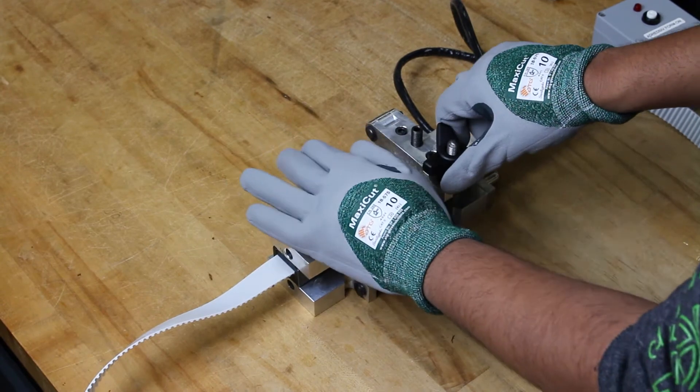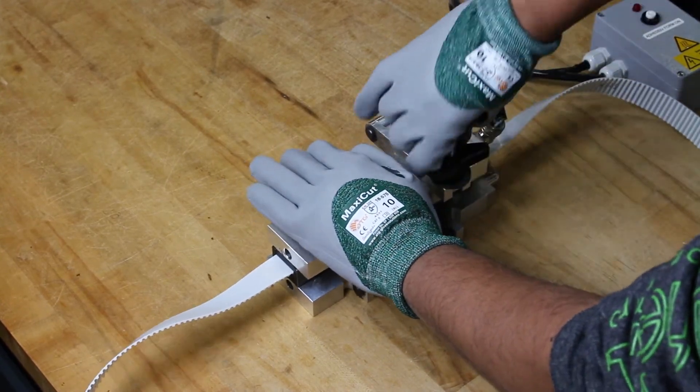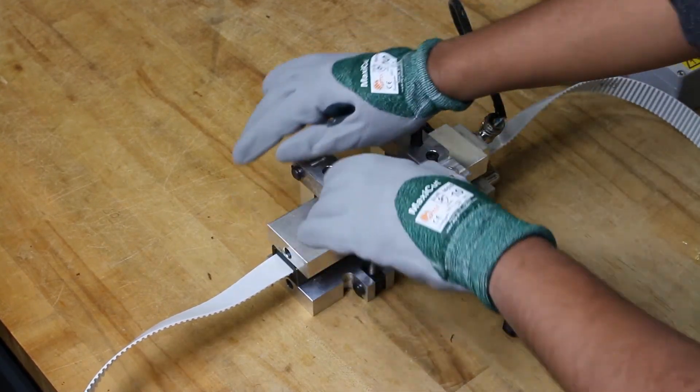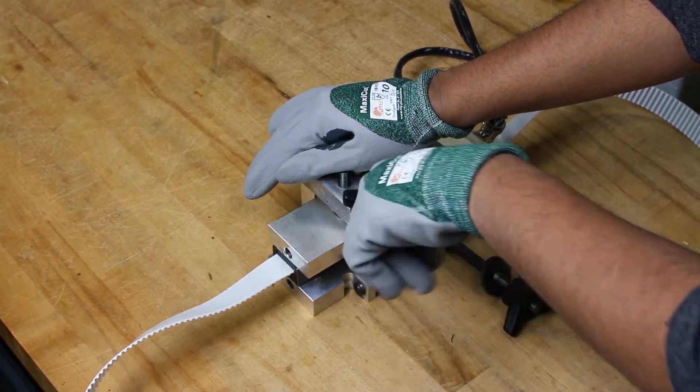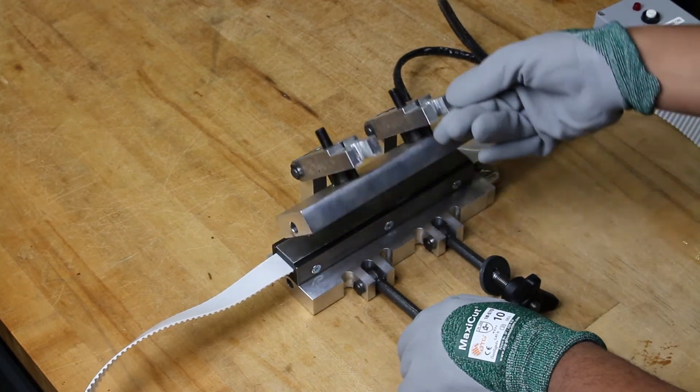Once the light on the control box goes out, you can unscrew the thumb screws and remove the welded belt from the welder. Be sure to wear heat resistant gloves while doing this as the welder will have gotten extremely hot to the touch.